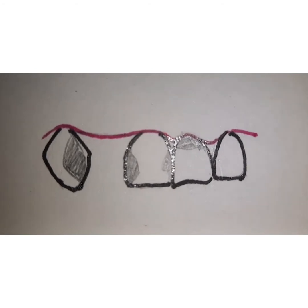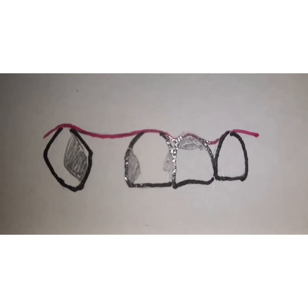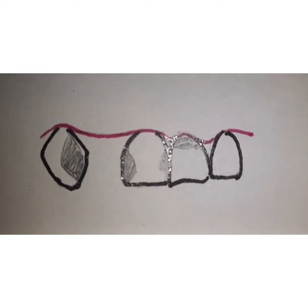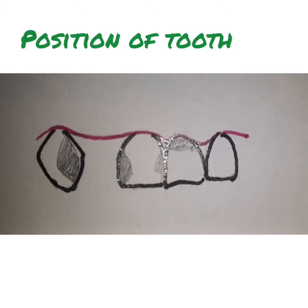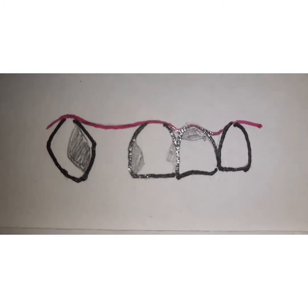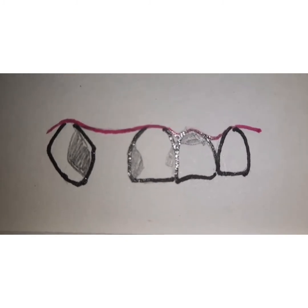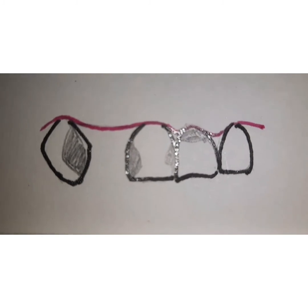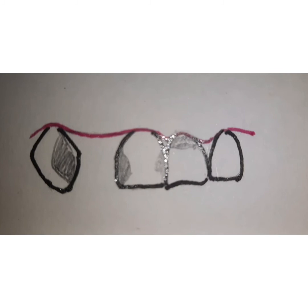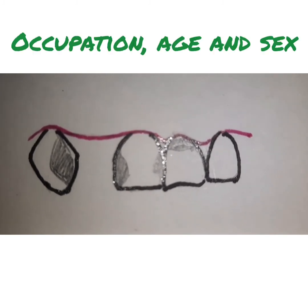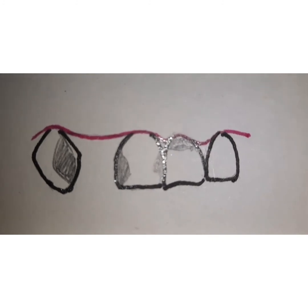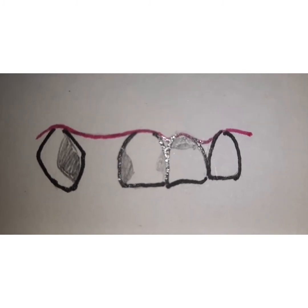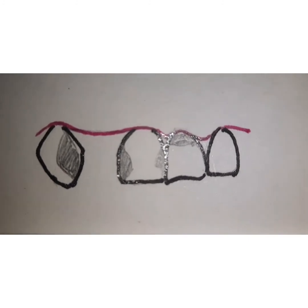In cases of significant periodontal problems, it is better to go for a splinting type of restoration in your treatment plan. The position of the tooth also influences retainer selection — in the anterior region where aesthetics is the primary concern, you can prefer a partial veneer preparation, while in the posterior region a full veneer type of retainer is preferred. Occupation, age, and sex of the patient also determines retainer selection.